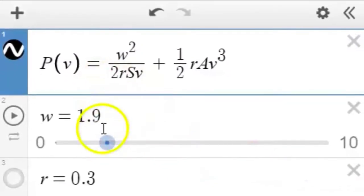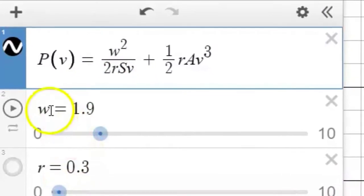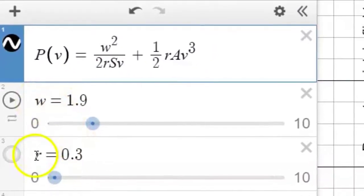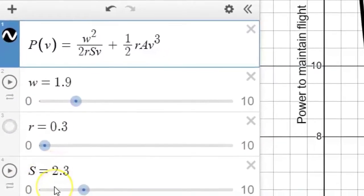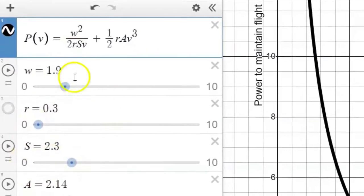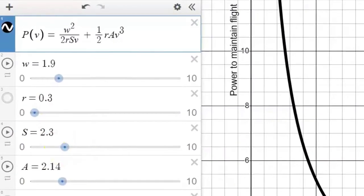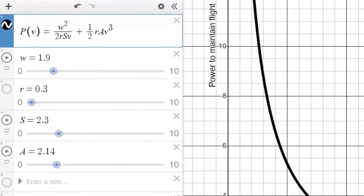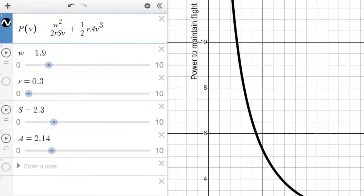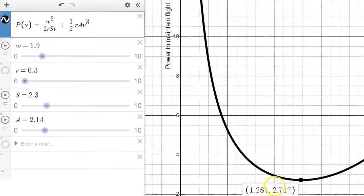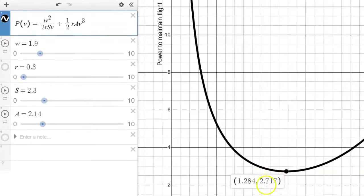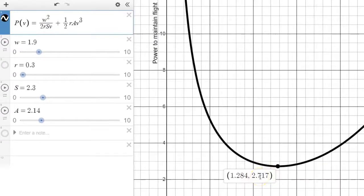So right now we're just, I've just randomly stopped all those constants. W, the weight of the bird, R, the density of the air. S and A are those special constants for the size and shape of the bird. We've just stopped those at a random place and we can see that there is indeed a minimum value. At a speed of 1.284 units, the power required to maintain flight is minimized at 2.717. Nice.